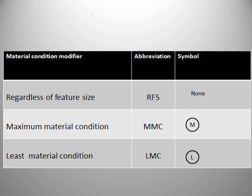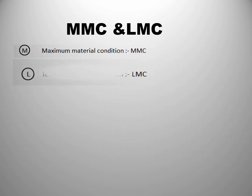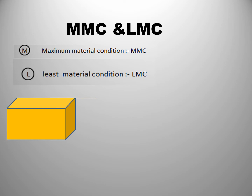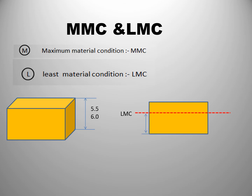Now we can discuss MMC and LMC. In material condition there are three topics: first is regardless of feature size, abbreviated as RFS, then maximum material condition MMC, and least material condition LMC. To understand MMC and LMC, consider a component with a tolerance of 5.5 to 6. For this component, the LMC condition is 5.5 and the MMC condition is 6.